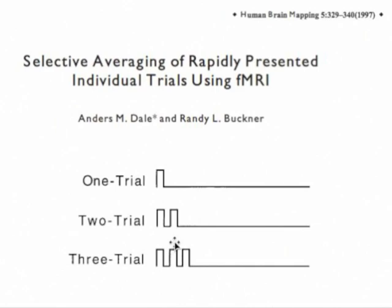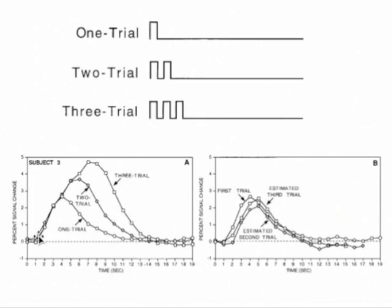The fMRI response to the one-trial condition looked very similar from visual cortex to the fMRI response already seen in sensorimotor cortex in response to a button press — the stimulation occurred between 0 and 1 second, but the hemodynamic response really started to ramp up at around 1 second, peaked at about 4 seconds, and gradually dropped off again to baseline levels.